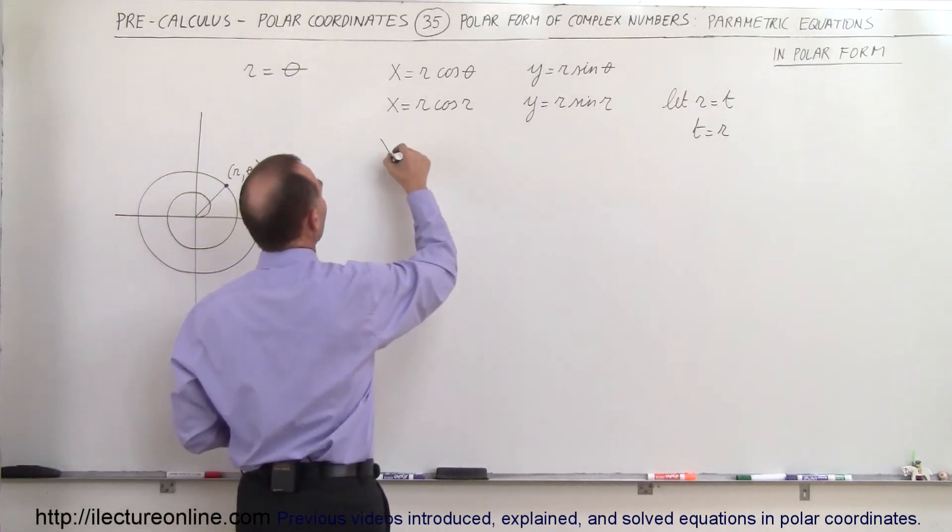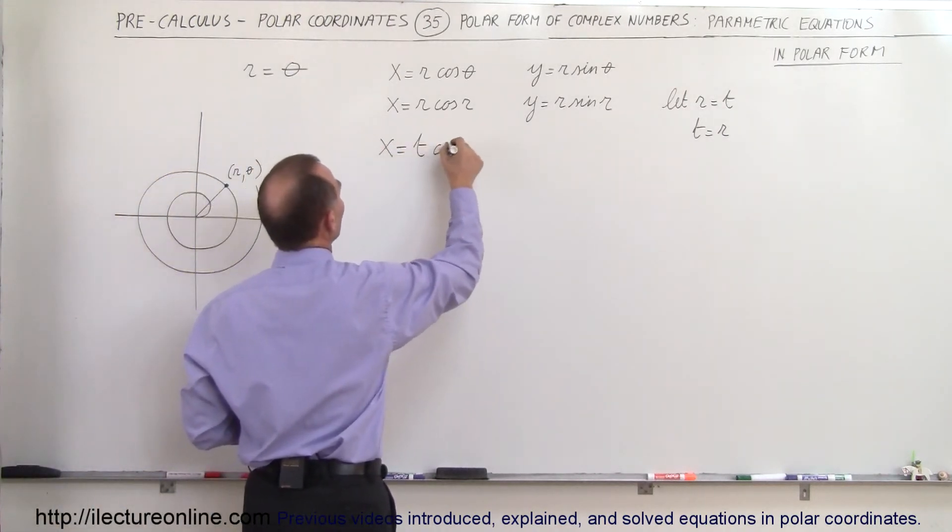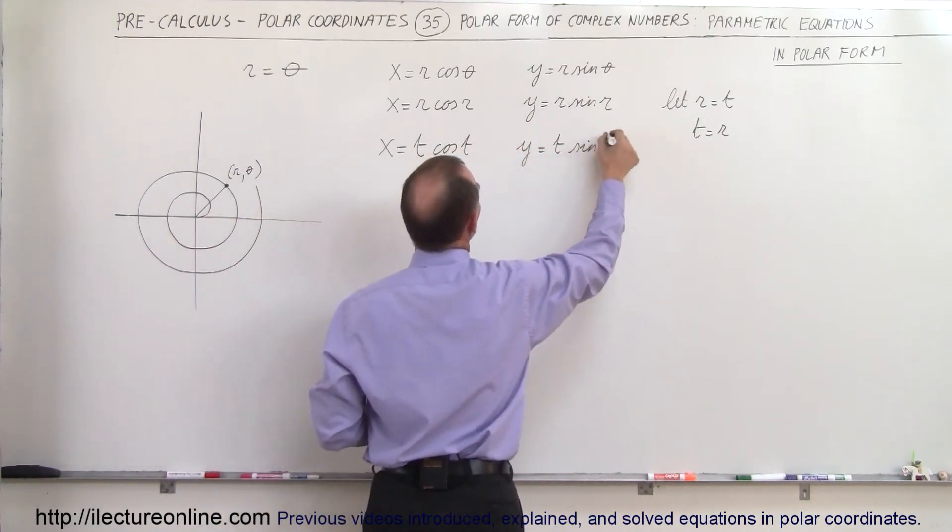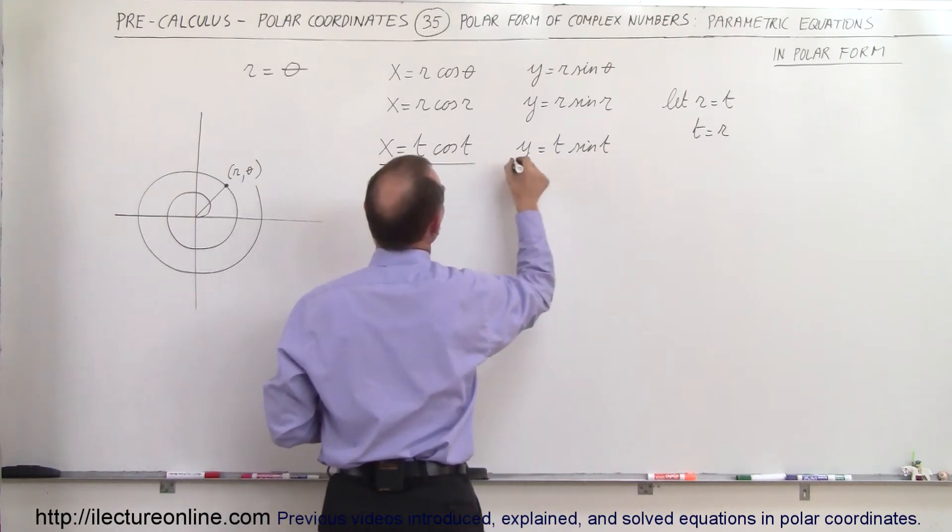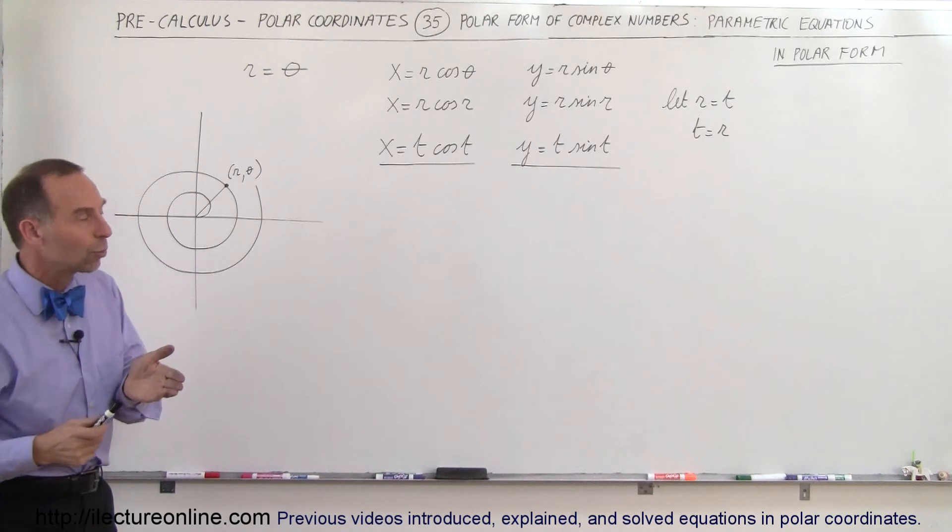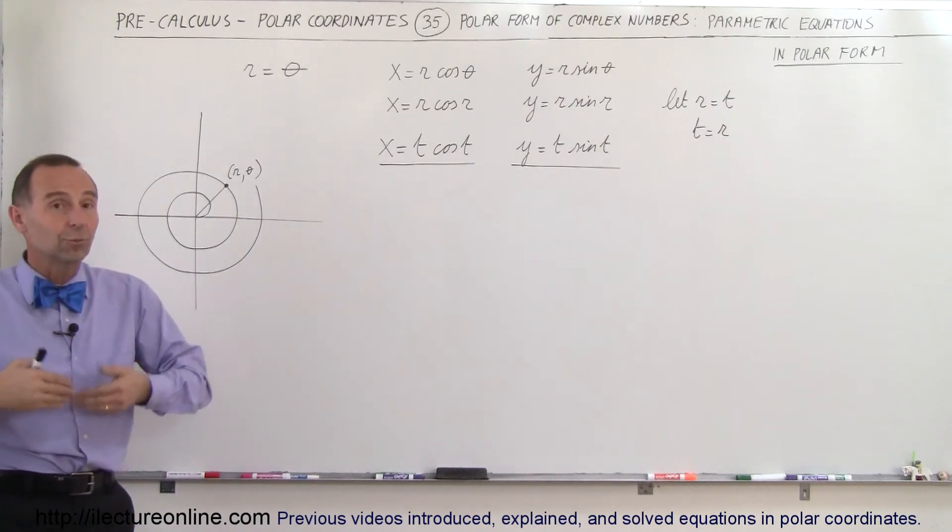That means that we can now write x is equal to t times the cosine of t and y equals t times the sine of t. And so now we have two parametric equations, both for x and y, that will now give us the x-coordinate and the y-coordinate in terms of time.